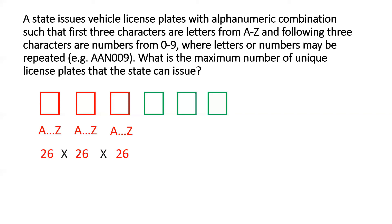Now let's come to the green placeholders. The first green placeholder has to be filled by any one of the numbers from 0 to 9, so it can be filled in 10 different ways. So the number of ways in which the first four placeholders can be filled is 26 multiplied by 26 multiplied by 26 multiplied by 10.